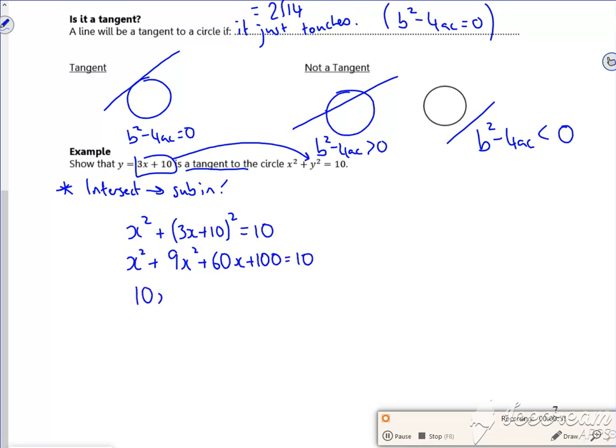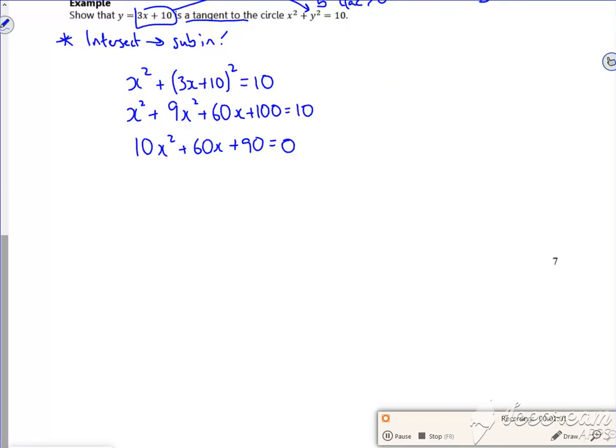So 10x squared plus 60x, take the 10 over, plus 90 equals zero. To make it a little bit easier, I'll just divide through by 10. Because it's equal to zero, isn't it?